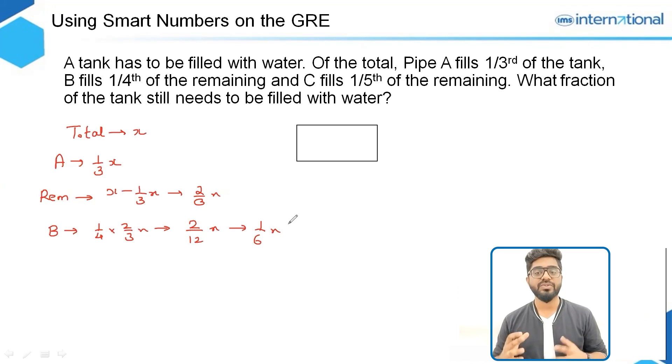Now C fills one fifth of the remaining. Again, this is not one fifth of the total but one fifth of the remaining. On finding the remaining part, this will be equal to two thirds of x minus one sixth of x.